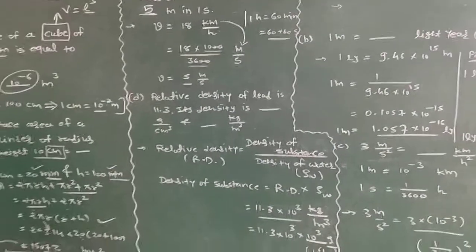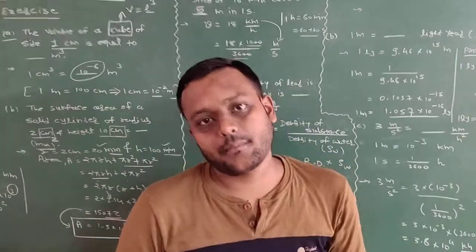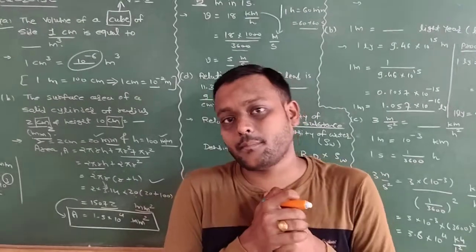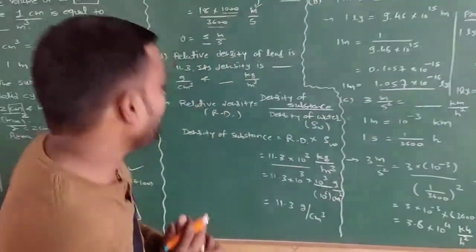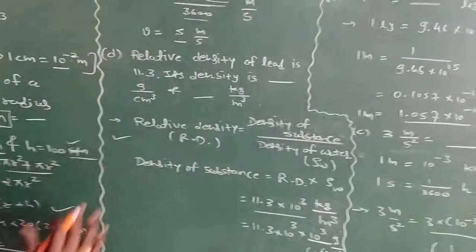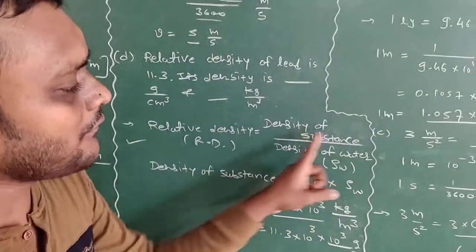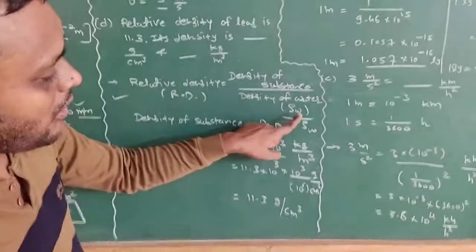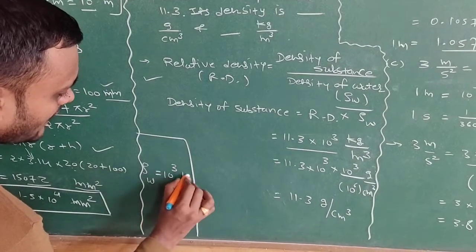That was the 3rd question. Now the 4th question has an application of relative density, which you also studied in 9th standard. The formula for relative density is: relative density = density of substance divided by density of water. Density of water (rho_w) is 10 raise to 3 kg per meter cube. You should remember this value. You can write it at the top of the page for easy reference.